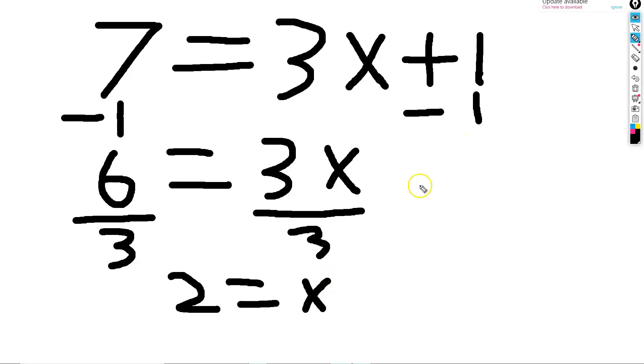We can check to make sure this solution is correct by substituting this 2 for x in our original equation. We can see that our solution is correct because 3 times 2 equals 6 plus 1 equals 7, and 7 does equal 7.